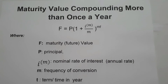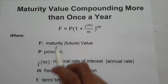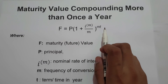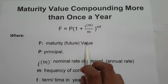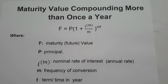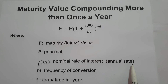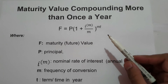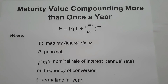In this video, we are going to focus on how to find the maturity value compounding more than once a year. We are going to use the formula F equals P times the quantity of 1 plus I raised to M, over M, raised to MT, where F is the maturity value or future value, P is the principal or present value, I raised to M is the nominal rate of interest or annual rate, M is the frequency of conversion or number of periods, and T is the term or time in years.